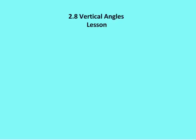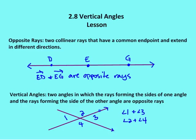What is a vertical angle and what do we know about vertical angles? Let's start by defining what opposite rays are, because we'll need to know what opposite rays are as part of the definition of vertical angles. An opposite ray consists of two collinear rays that have a common endpoint and extend in different directions. Here I see ray ED, which extends to the left of the page, and ray EG, which extends to the right of the page. D, E, and G are all collinear, and ED and EG have a common endpoint, so I know that these are opposite rays.